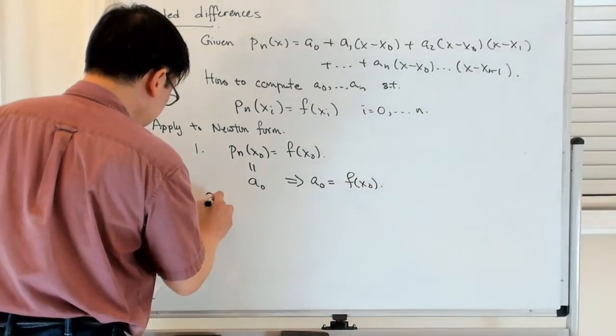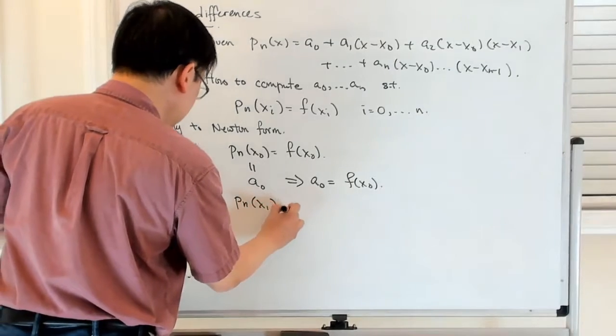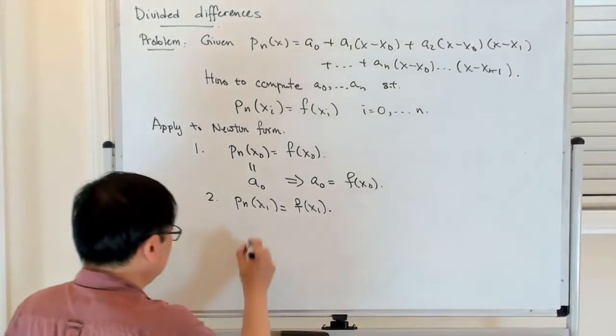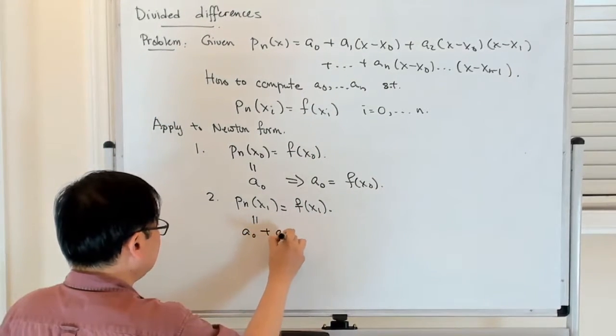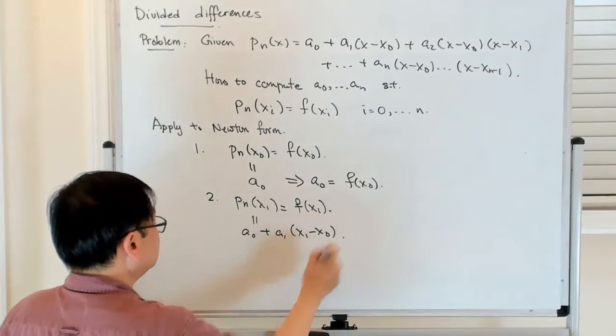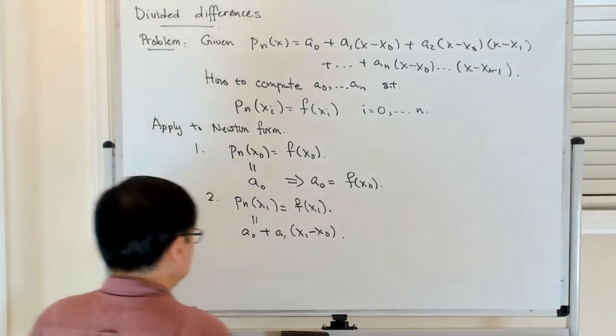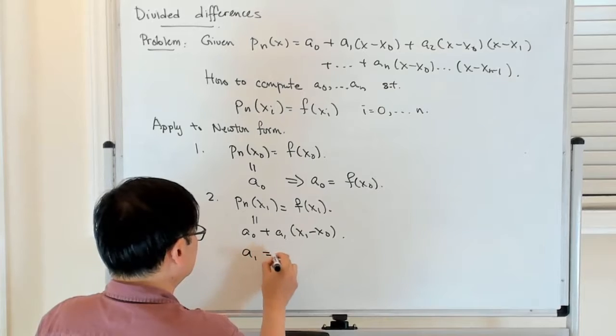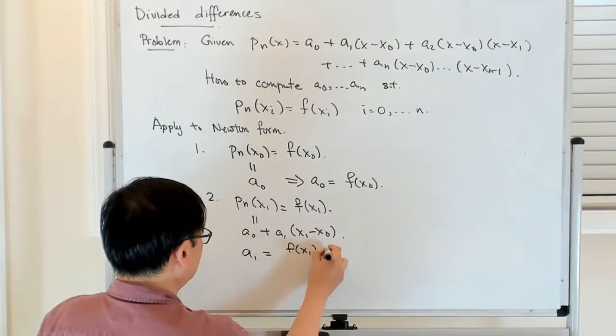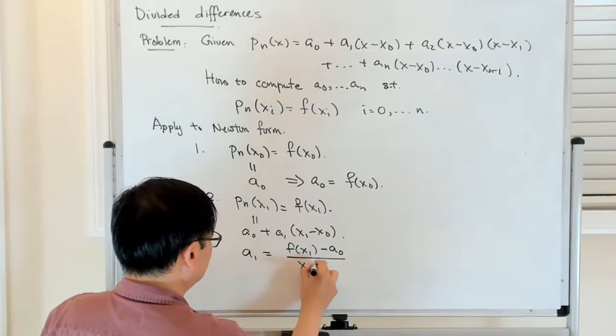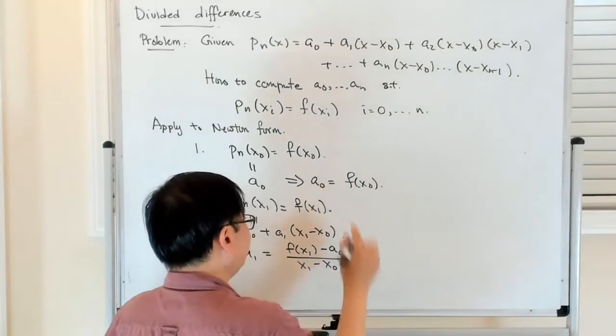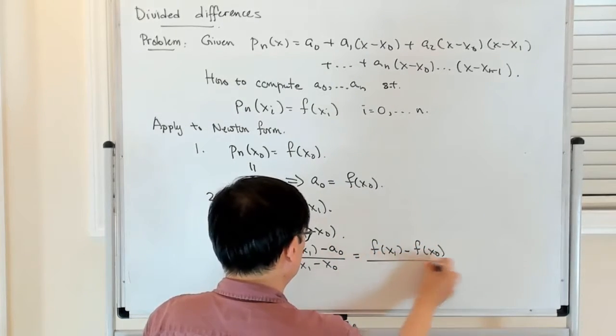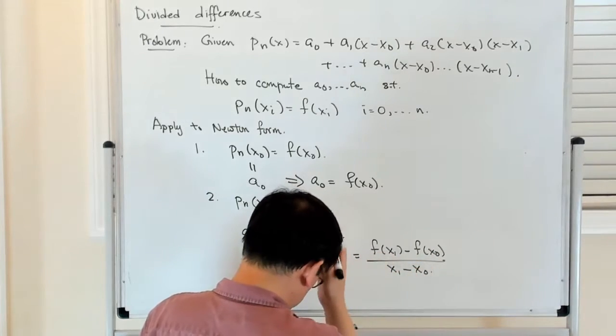So let's look at the second condition, that Pn(x1) is equal to f(x1), but Pn(x1) is equal to a0 plus a1(x1 - x0). From that I can compute what a1 has to be, so a1 is equal to [f(x1) - a0] / (x1 - x0). But a0 is f(x0), so this looks like [f(x1) - f(x0)] / (x1 - x0).